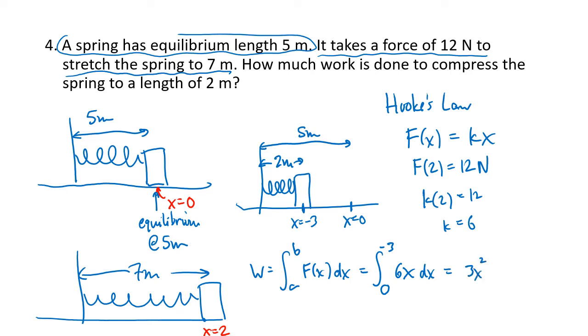So antiderivative of 6x is 3x². We're going to plug in negative 3 and 0 and subtract in that order. So we get 3 times (-3)² minus 3 times 0². 3 times (-3)², that's 3 times 9, which is going to be 27. And in this case, that's going to be joules because we're doing work in metric units.